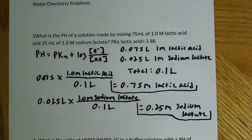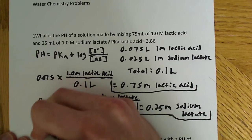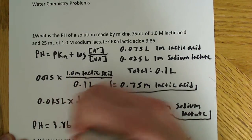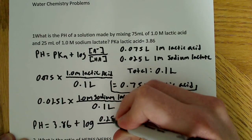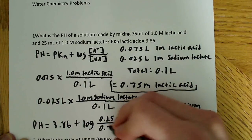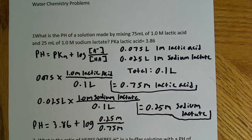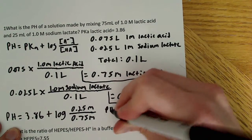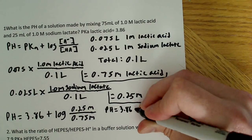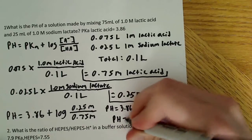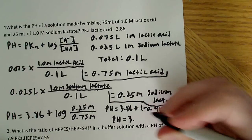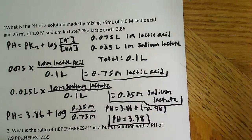So we have the two concentrations now that we need. Basically all we have to do is plug this into the Henderson-Hasselbalch, because we have the pKa already, which is 3.86. So the pH is equal to 3.86 plus the log of sodium lactate — that's 0.25 — over 0.75 moles of lactic acid. If you plug that into the calculator, the pH is equal to 3.86 plus about negative 0.48, and when you add those together you wind up with a pH of 3.38. And that's the answer.